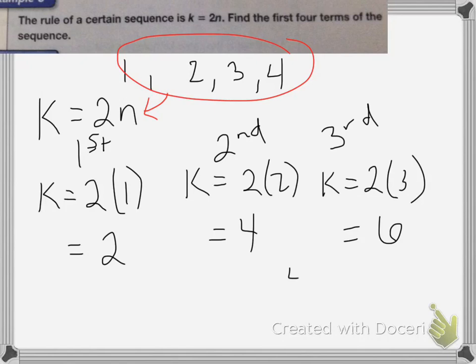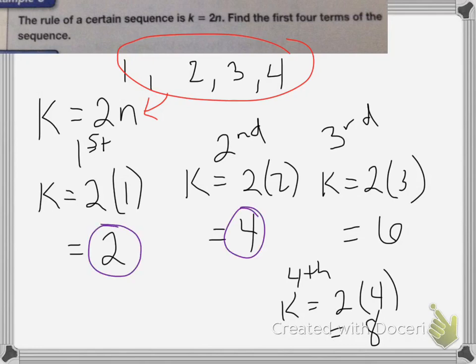Okay, and my last one, my fourth term, is going to be k = 2 × 4, which is equal to 8. So my answers for the terms in the sequence will be 2, 4, 6, and 8. And that's all for this lesson.